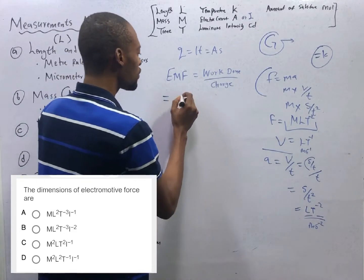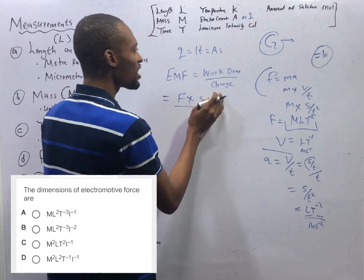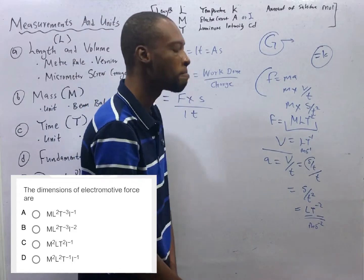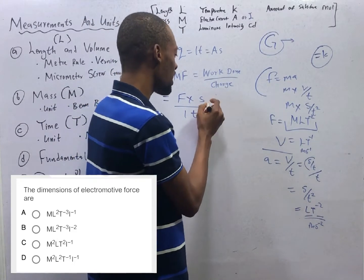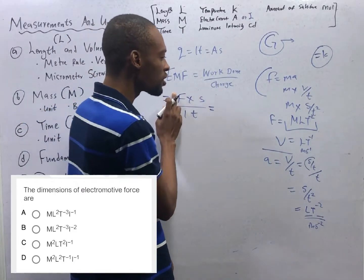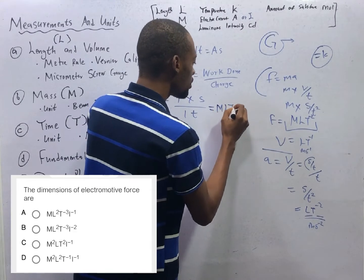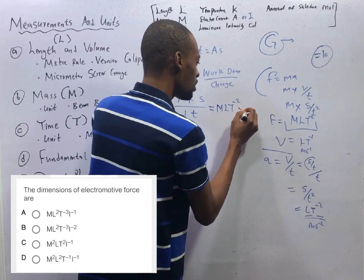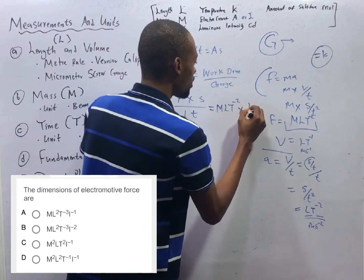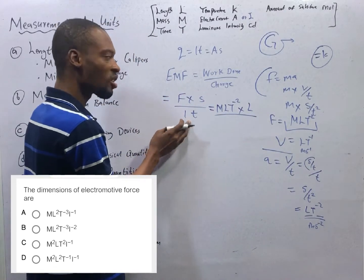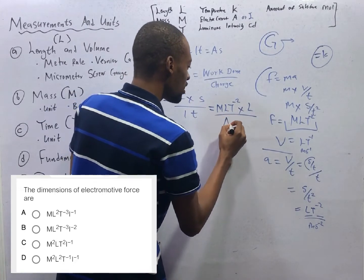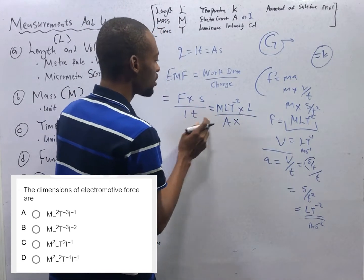Simplify. Work done is force times distance. And charge is current times time. Current times time. That is charge. Q is equal to IT in physics. Force is MLT raised to the power of minus 2 times distance is length L over. I is current.